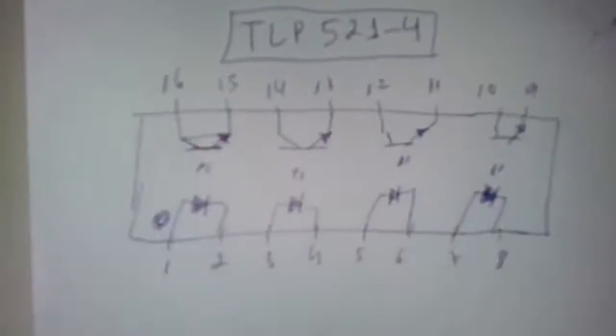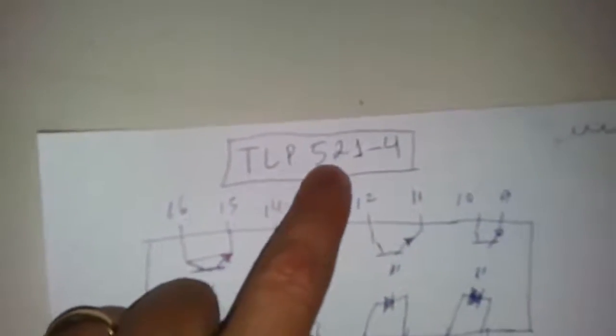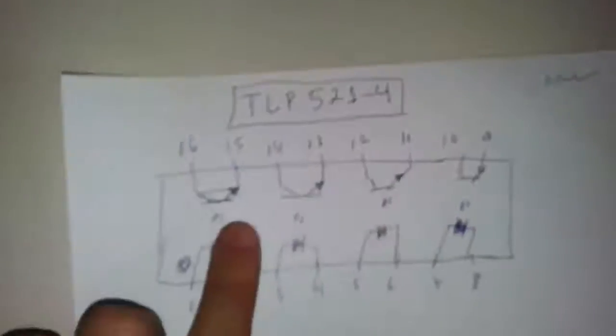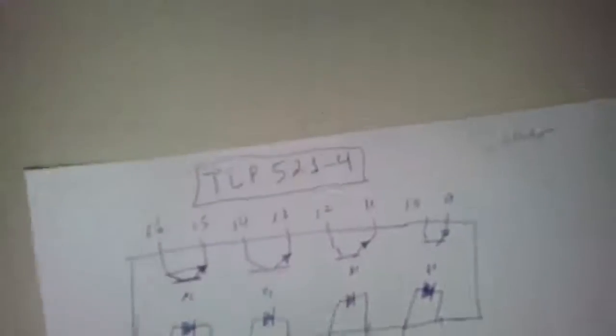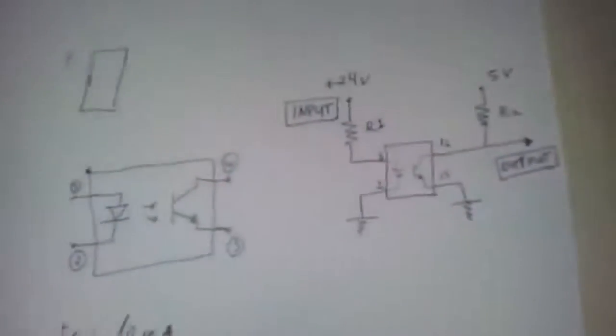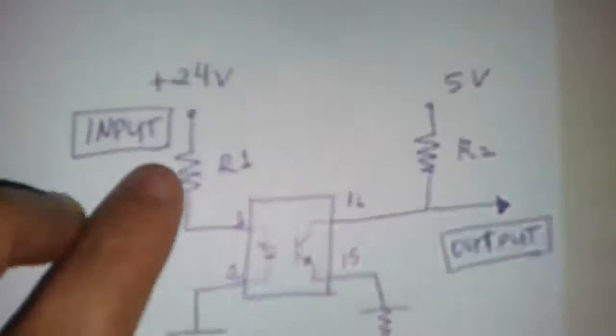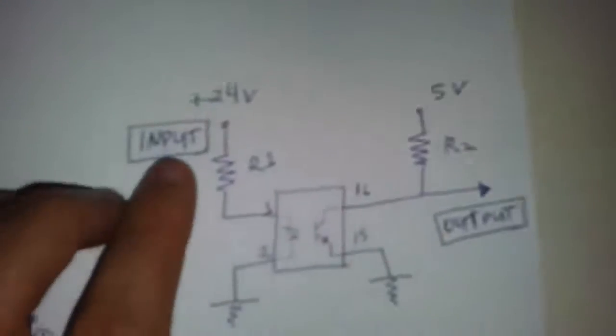Here, the IC, TLP5214. We have four optical isolators each circuit. So it is open collector. We must calculate R1 and R2, the resistors to our circuit.